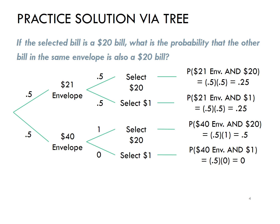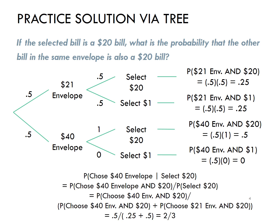Well, remember, that is the probability of selecting the $20 bill and the $40 envelope divided by the total probability of selecting the $20 bill. Well, the $20 bill shows up in the third branch and the first branch. So if I add .5 and .25, I can get the total probability of selecting the $20 bill.